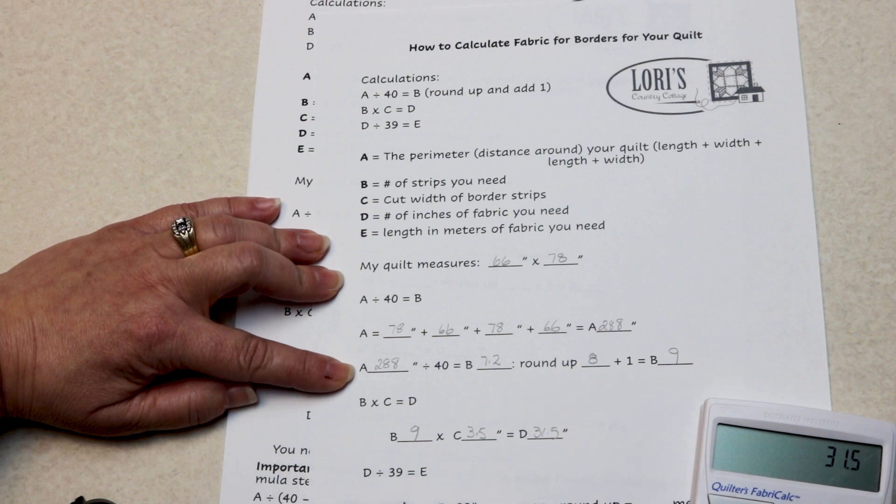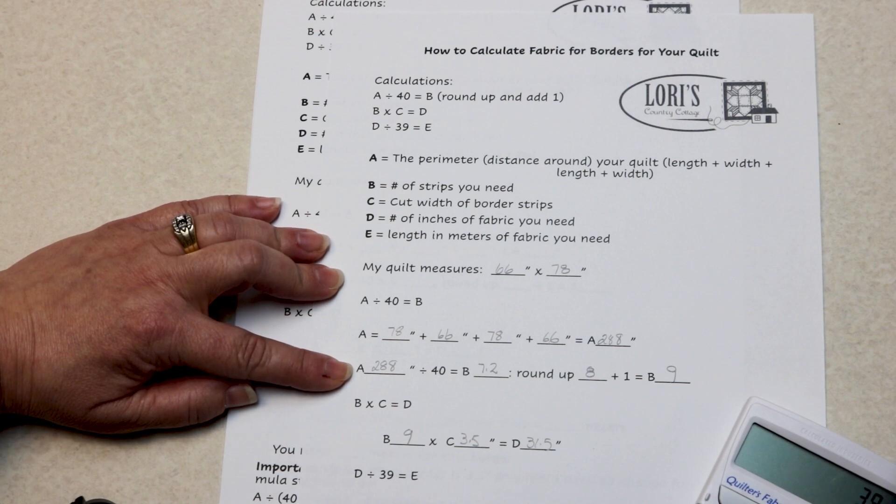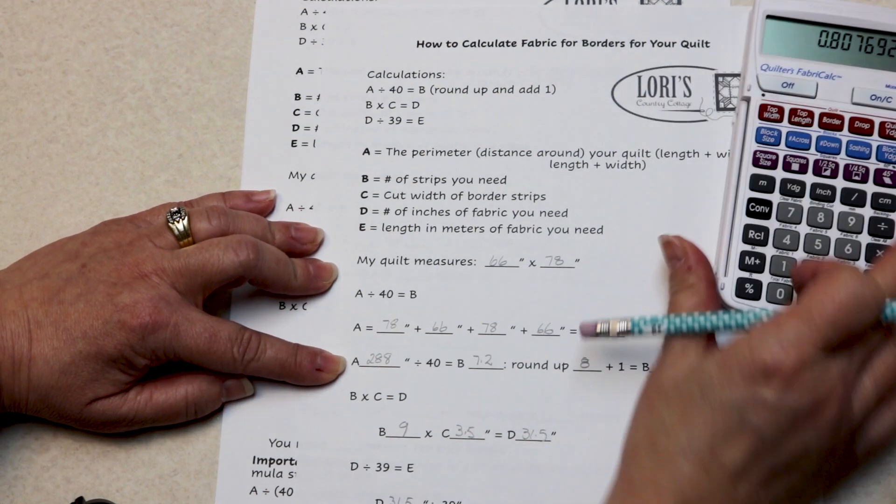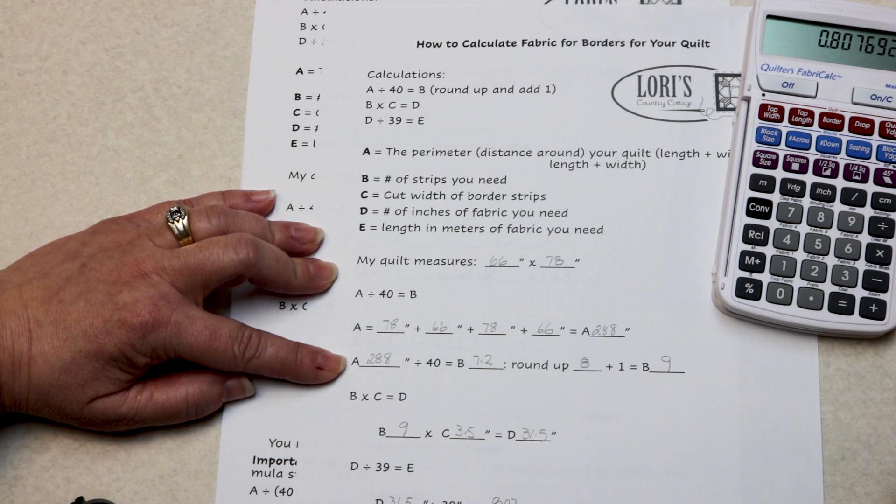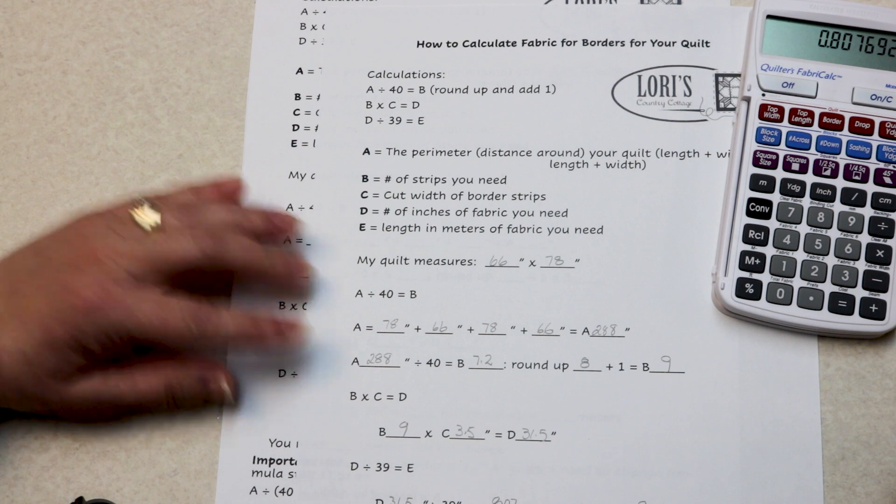To figure out what I need in meters, 31 and a half divided by 39 inches is 0.807 meters. I'm going to round up to 0.9—gives me some wiggle room. I need 0.9 meters for my second border.